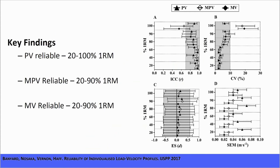The key findings were that PV was reliable for every relative load we tested, whereas MPV and MV were reliable for all relative loads except 100% 1RM. We established this by creating an acceptable zone of reliability, which included an ICC of 0.7 or greater, a CV percentage at or below 10%, and a small or trivial effect size — anything at or below 0.59.